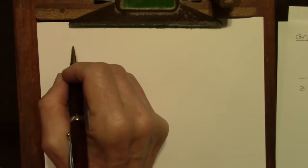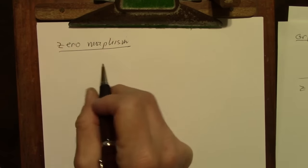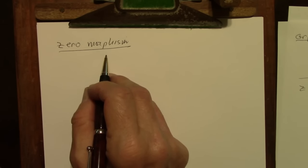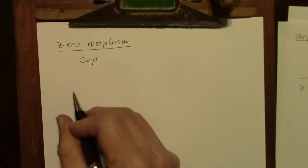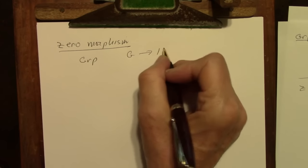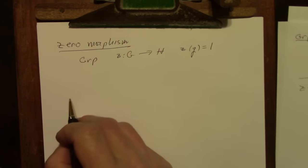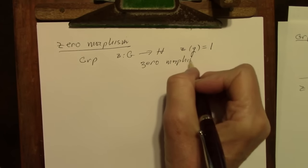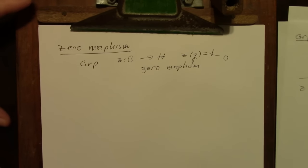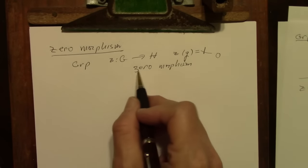Related to the concepts of initial, terminal, and zero objects is something called a zero morphism. To explain this somewhat strange concept, let's look at some categories. In the category Group, there is a morphism between any two groups — I'll call it Z — that sends every element to the identity. For lack of a better word, you might call this the zero morphism. It would make sense for an abelian group because this would be the zero element, but for a multiplicative group you'd want to call it the identity morphism, except that already has a meaning, so zero morphism is the best we can do.